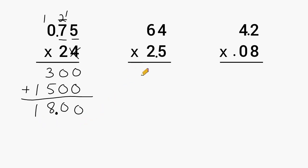Alright, let's go to 64 multiplied by 2.5. So we have 5 times 4 is 20. Carry the 2. And 5 times 6 is 30, plus 2 more is 32.